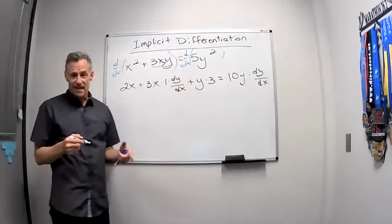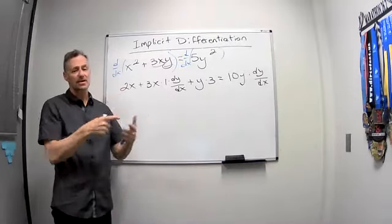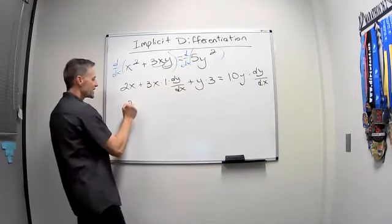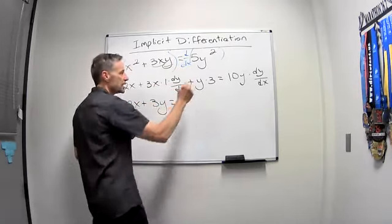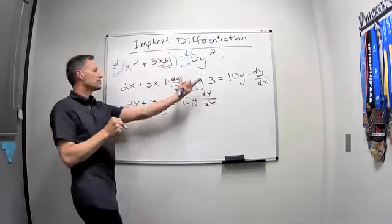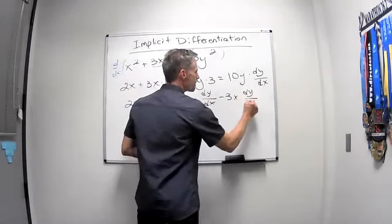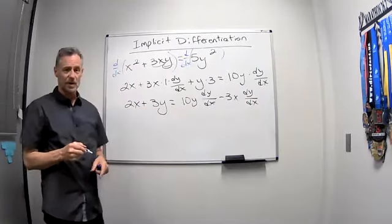Okay. This time I have two dy/dx's. The goal is get them on the same side so I can factor them out. So I'll leave the 2x and the 3y over here. I'll keep the 10y dy/dx. And move this over so I get negative 3x dy/dx.